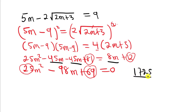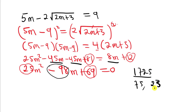I need two numbers that when multiplied give 1725, but when added give the coefficient of m, which is minus 98. The two numbers that work are 75 and 23. Since they need to be negative, we use negative 75 and negative 23. When you multiply these two numbers you get positive 1725, and when you add them you get minus 98.